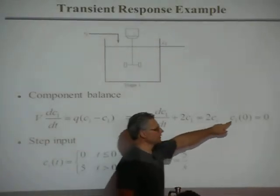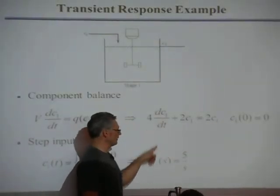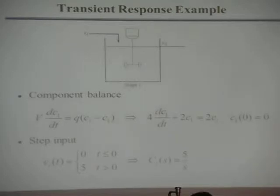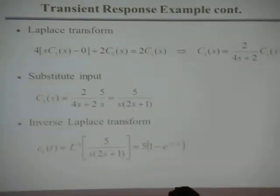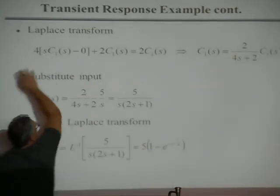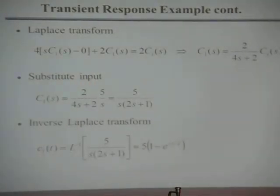I'm going to take the Laplace transform of this equation here and substitute in this initial condition, which I'll need when I take the Laplace transform of the derivative, and also substitute this function for the input. First term is 4 times dc1/dt. That's the Laplace transform of dc1/dt: s times Laplace transform of c1 minus the initial condition, which is zero for this problem. The next term is 2 times c1 of t becomes 2 c1 of s. On the right-hand side was 2 ci of t, it becomes 2 ci of s.